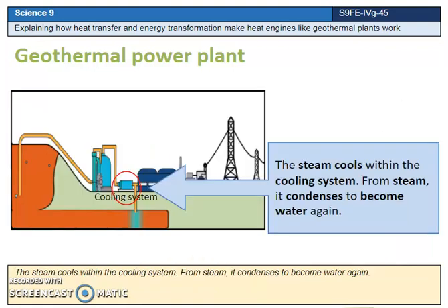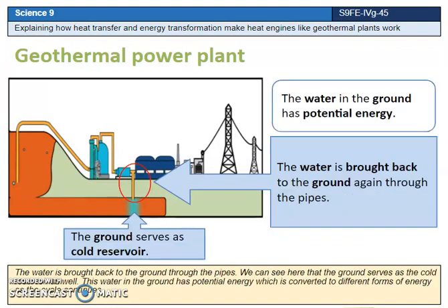The steam cools within the cooling system. From steam, it condenses to become water again. The water is brought back to the ground through the pipes. We can see here that the ground serves as the cold reservoir as well.